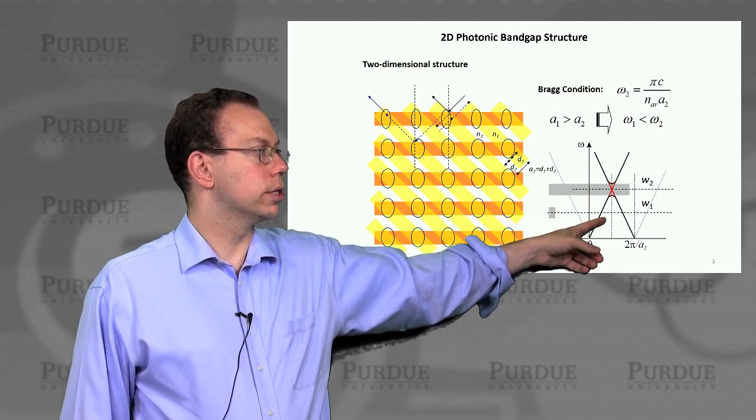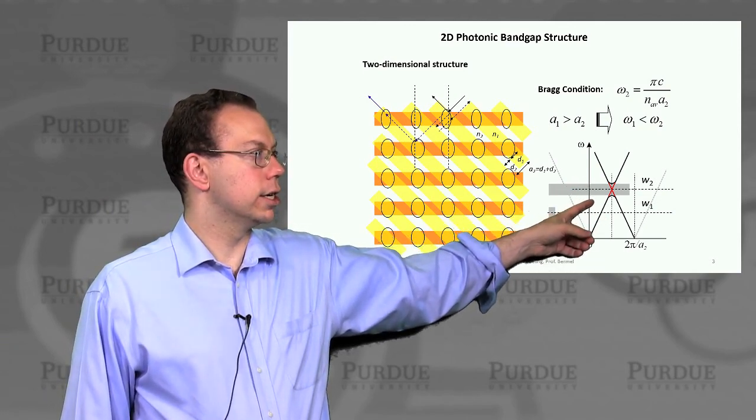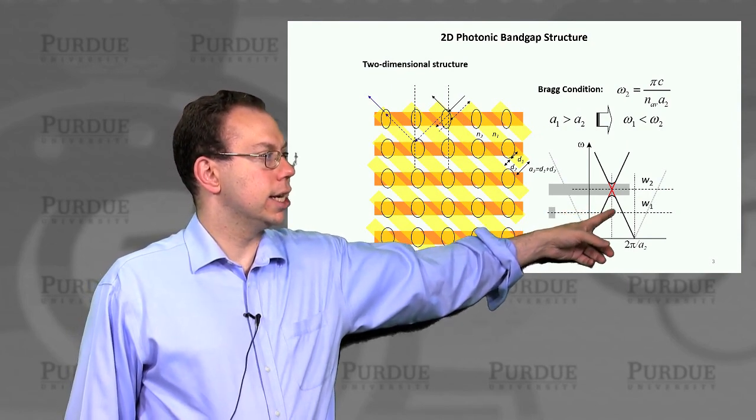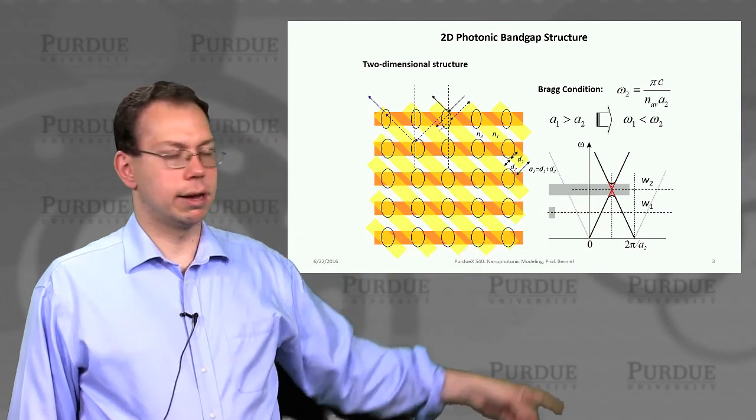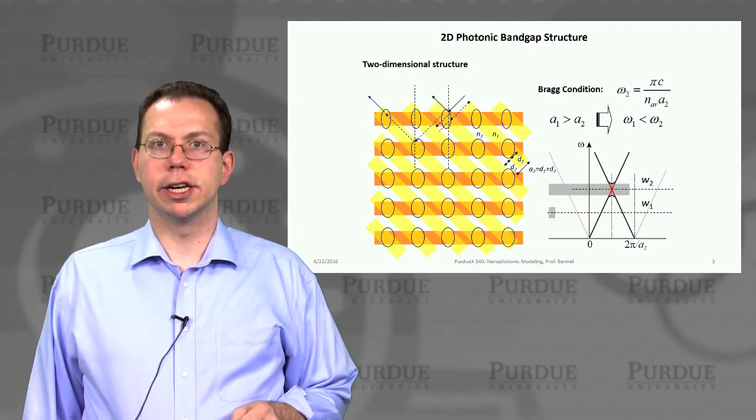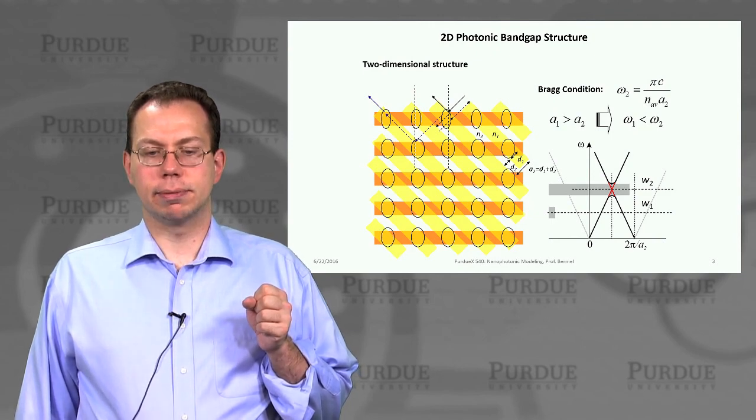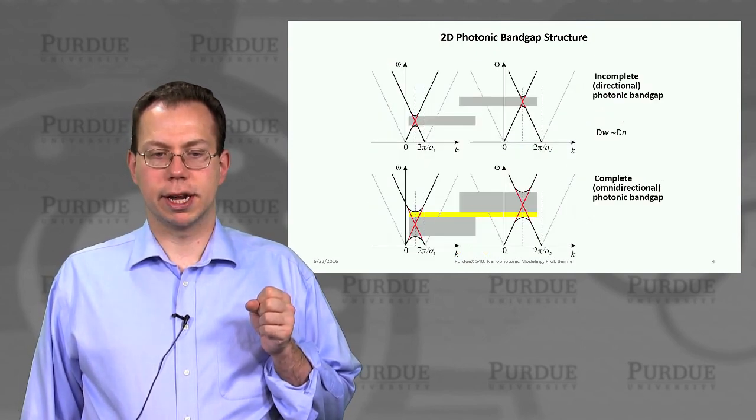Like at different angle. So basically, each k vector, which has a certain angle and certain effective periodicity gives rise to these certain band gaps. And you can see how these band gaps are varying. And so this structure would be said, perhaps, to have at least a partial photonic band gap.